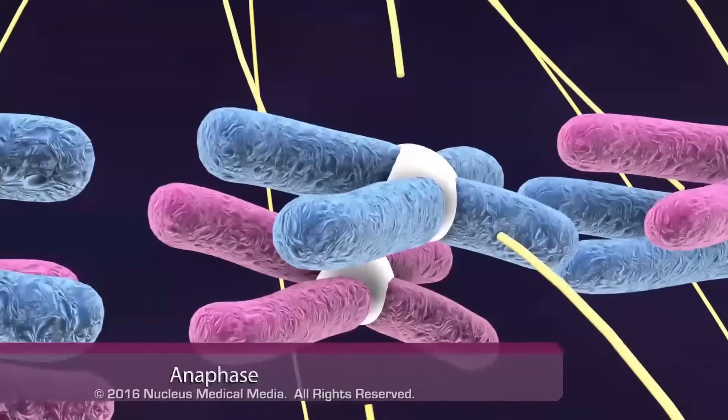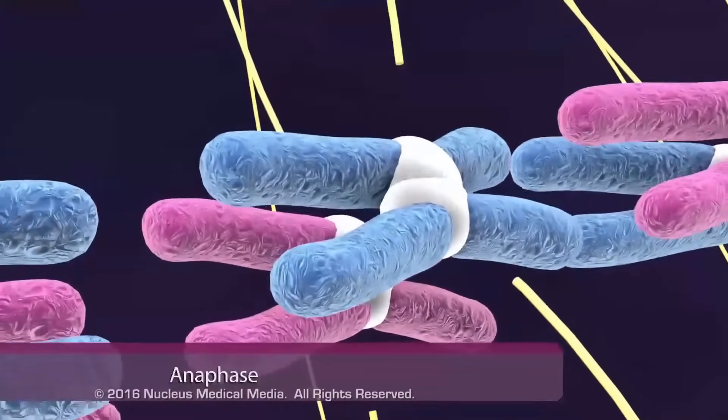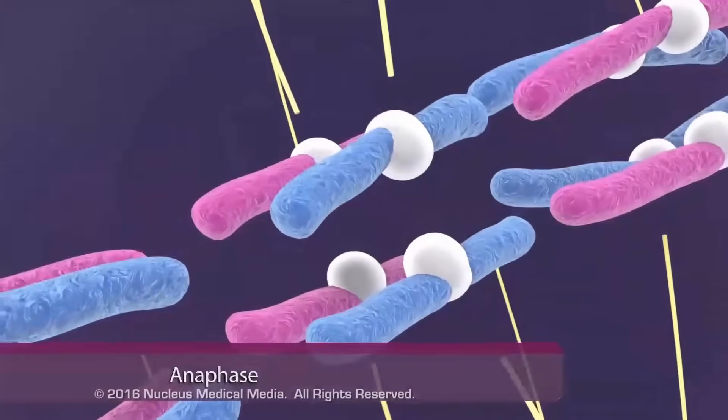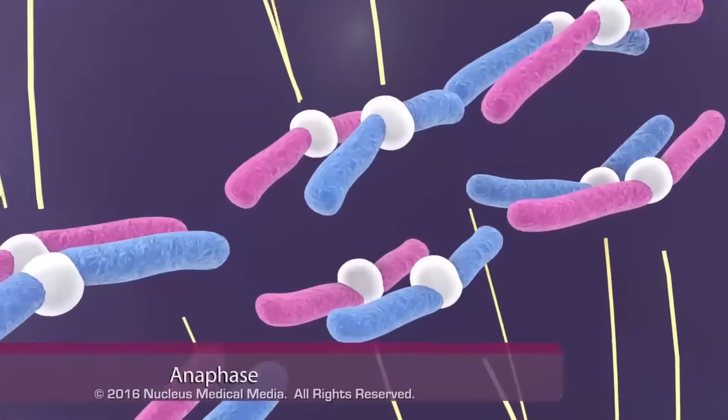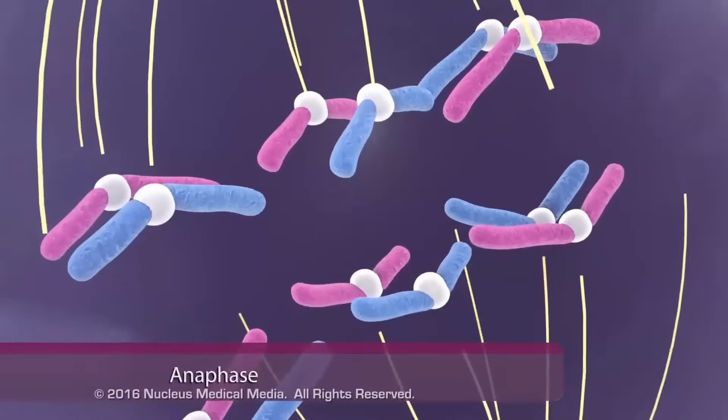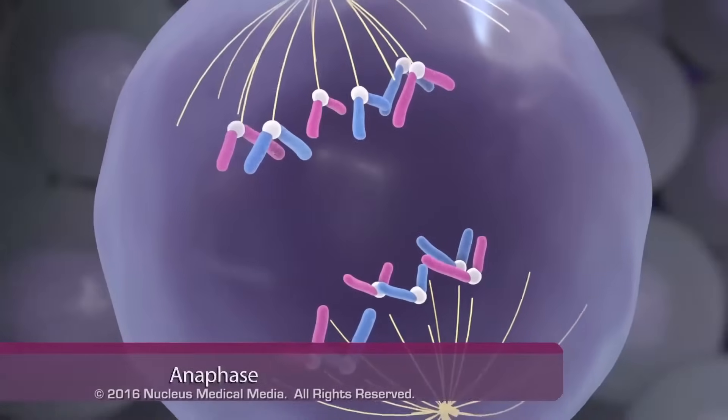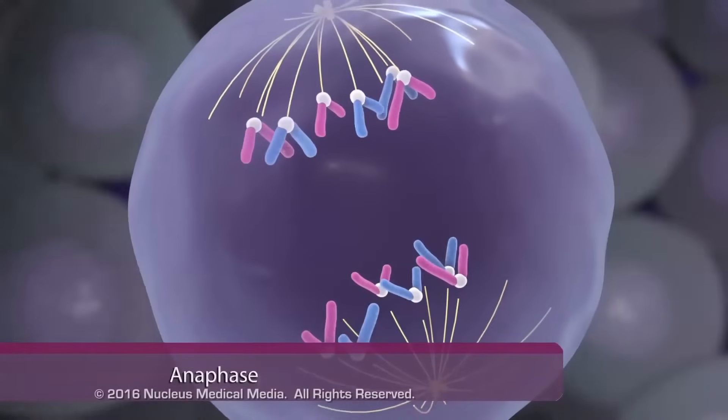In anaphase, each chromosome, consisting of two genetically identical chromatids, splits in two. Each chromatid, now considered a single-stranded daughter chromosome, migrates to the opposite end of the cell from its twin.